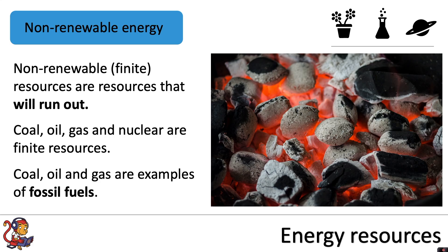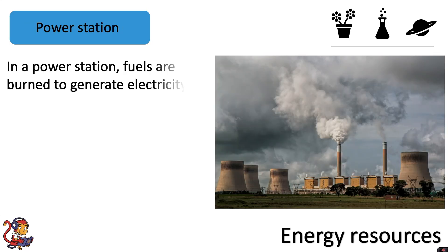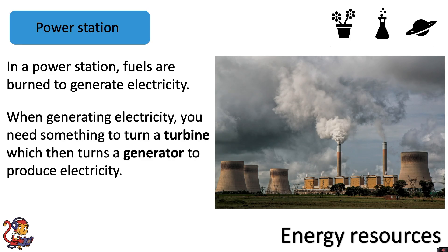We can use these non-renewable fuels in a power station. In a power station, fuels are burned to generate electricity. When generating electricity, you need something to turn a turbine, which then turns a generator to produce electricity. And that is then transmitted across the national grid into your homes.